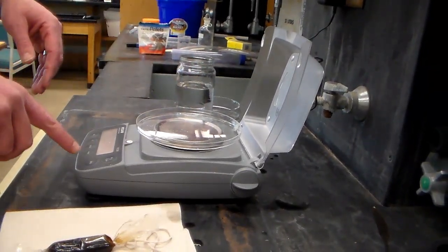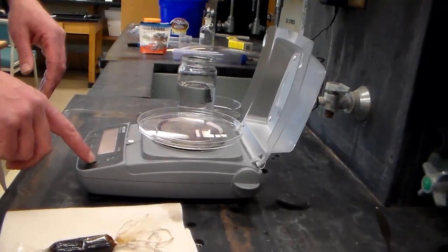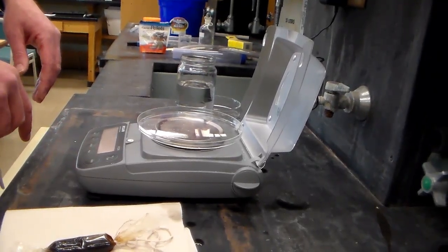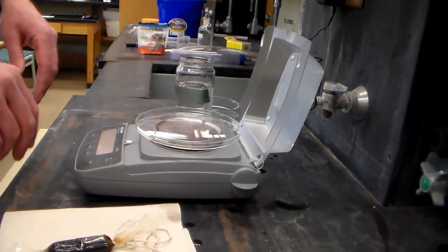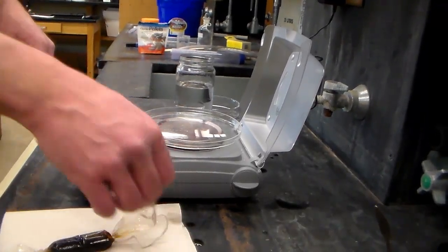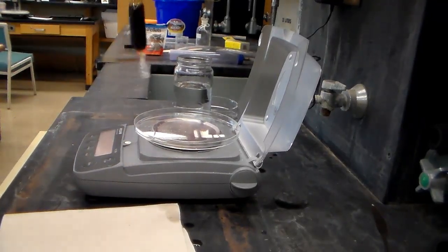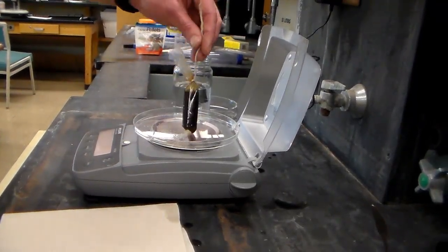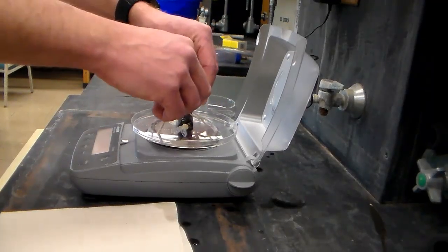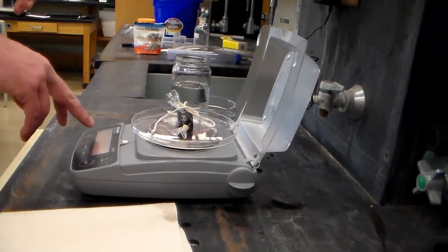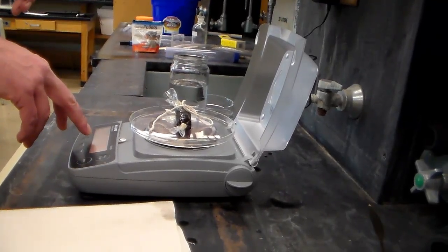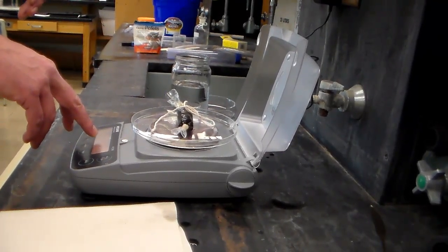So once it settles down a little bit we'll hit the zero button or the tare button, and now it should reset back to zero. So that's removed the weight of that tray, so now when we put this in we're just getting the weight of the dialysis tube. Carefully set that in the center. Make sure you put the string all in the tray as well. And then record the weight to at least one tenth of a gram.